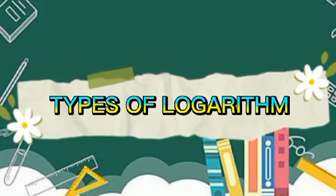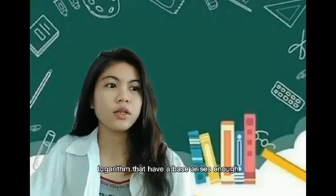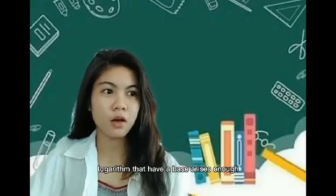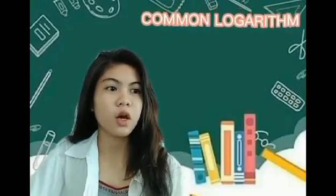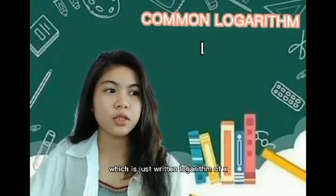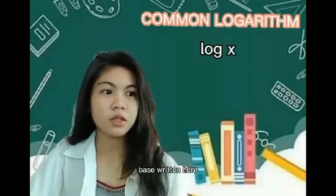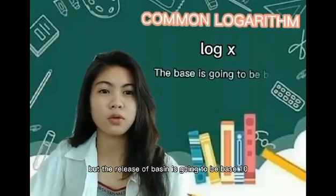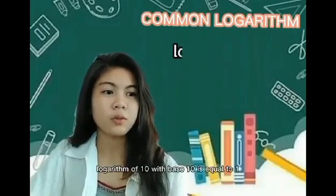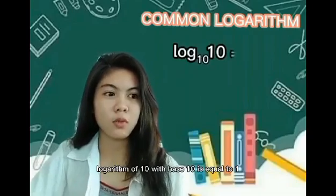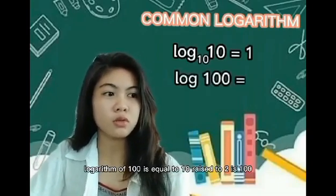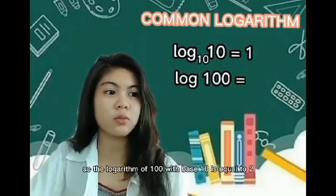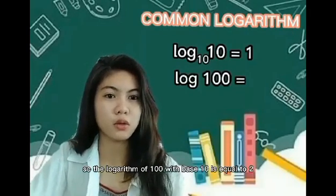Types of Logarithms: Logarithms that have a base arise so often that we have special notation for it. First is the common logarithm, which is just written logarithm of x. The base is not written here, but there really is a base and it's going to be base 10. Logarithm of 10 with base 10 is equal to 1. Logarithm of 100 is equal to 10 raised to 2 is 100, so the logarithm of 100 with base 10 is equal to 2.